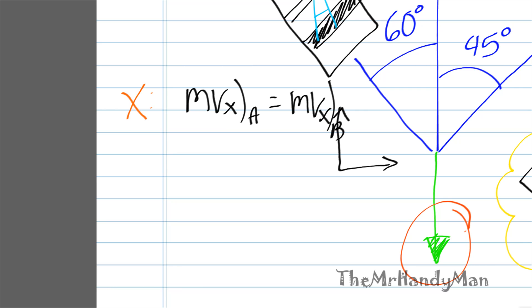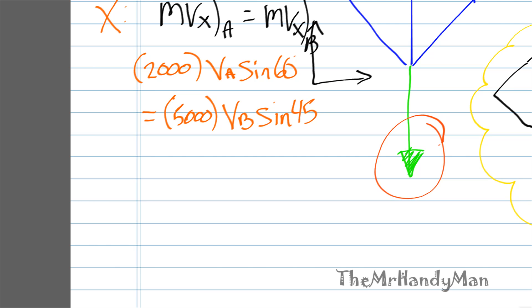So we can determine that MVx of A must equal MVx of B. Working that out, you can get 2,000 VA sine 60 equals 5,000 VB sine 45. And working all this out, if I were to really simplify that function, it's going to turn out to be 1.25 radical 6 times VA equals VB. Really make sure that you do that correctly because that can be the end of you if you mess up on that function.